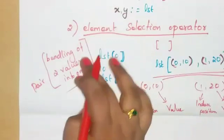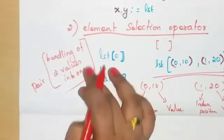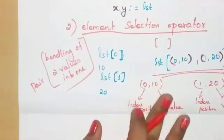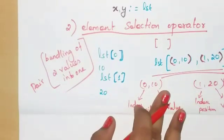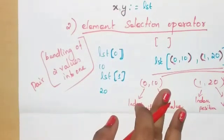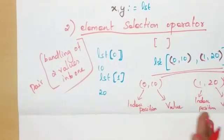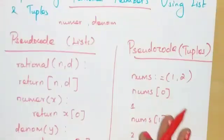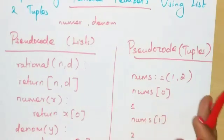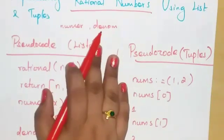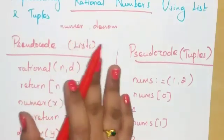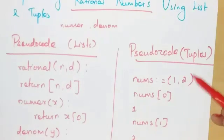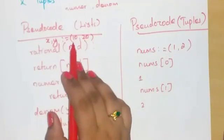So lists and tuples are called pairs. Now let us write the pseudocode for lists and tuples using rational numbers, which we discussed in a previous video. Rational numbers have two parts: a numerator and a denominator. This is the pseudocode for the list, and this is the pseudocode for the tuple.